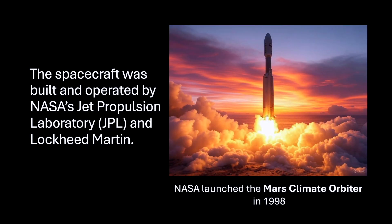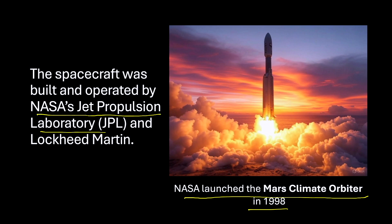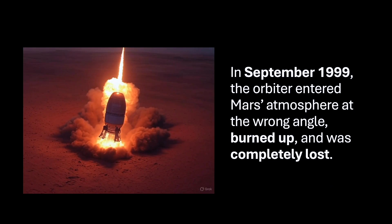Let me tell you one of the most famous and costly examples of what can go wrong without proper unit standardization. NASA launched the Mars Climate Orbiter in 1998 to study Mars' atmosphere and climate. The spacecraft was built and operated by NASA's Jet Propulsion Laboratory, commonly called JPL, and Lockheed Martin. In September 1999, the orbiter entered Mars' atmosphere at the wrong angle. It got burnt up and was completely lost.